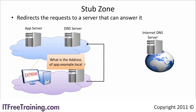A stub zone holds the details of the primary and secondary zones that are authority for that zone. When the request comes through for the zone, instead of being sent to the external DNS server, the request will be sent straight to a DNS server that can resolve the request. Stub zones are also a viable solution when the company does not want to give you access to download zone data. Remember that when you create a stub zone, if the DNS server it is pointing to changes, you must manually change the entries in the stub zone so that it points to the new server.